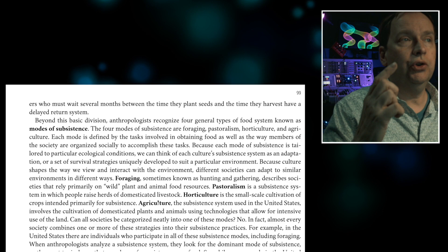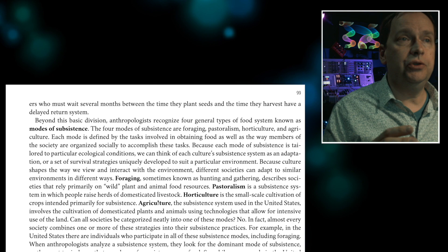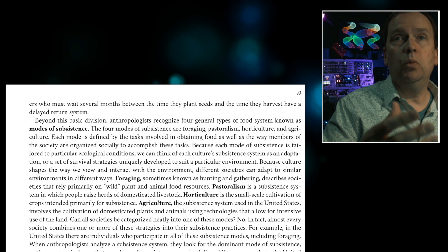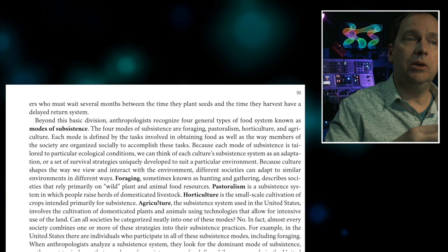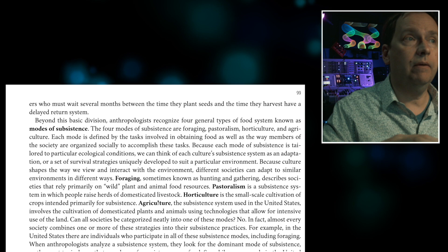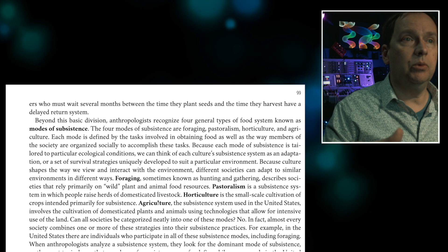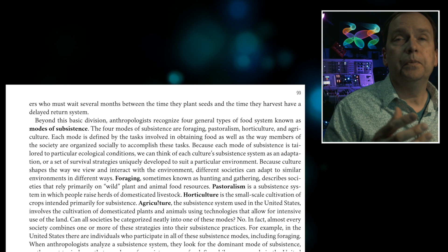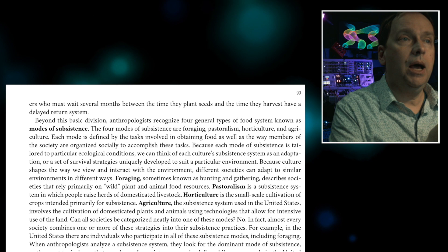You can chart how each subsistence mode provides for people and connects to other issues. For example, in pastoralist societies like the Maasai, women don't have as much connection to cattle and therefore lack power. Connect these four types of subsistence to social and cultural topics: foragers or hunter-gatherers gather wild plants and animals, while pastoralists rely on domestication of livestock and animal husbandry.